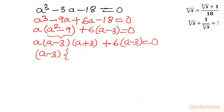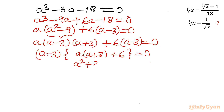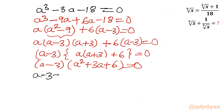Factoring out (a minus 3), we get (a minus 3) times (a squared plus 3a plus 6) equal to 0, giving either a equal to 3 or the quadratic factor equals zero.